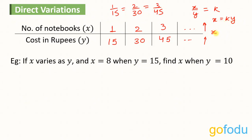This is also represented as X varies directly with Y, where this symbol represents variation. So the value of K here is 1 upon 15 and X and Y are in direct proportion. We can say X upon Y equals constant, or X1 upon Y1 is equal to X2 upon Y2. If nothing else is mentioned, we assume direct variation by default.